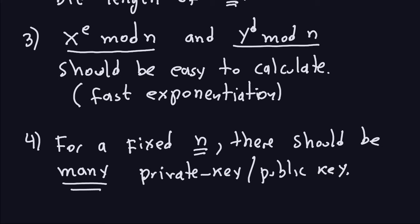If there were only one private key and public key for a fixed N, the system would be insecure — someone could guess the private key, which is particularly bad. So for a fixed N we want many choices, because we want the system to be secure. These are the four requirements for RSA.